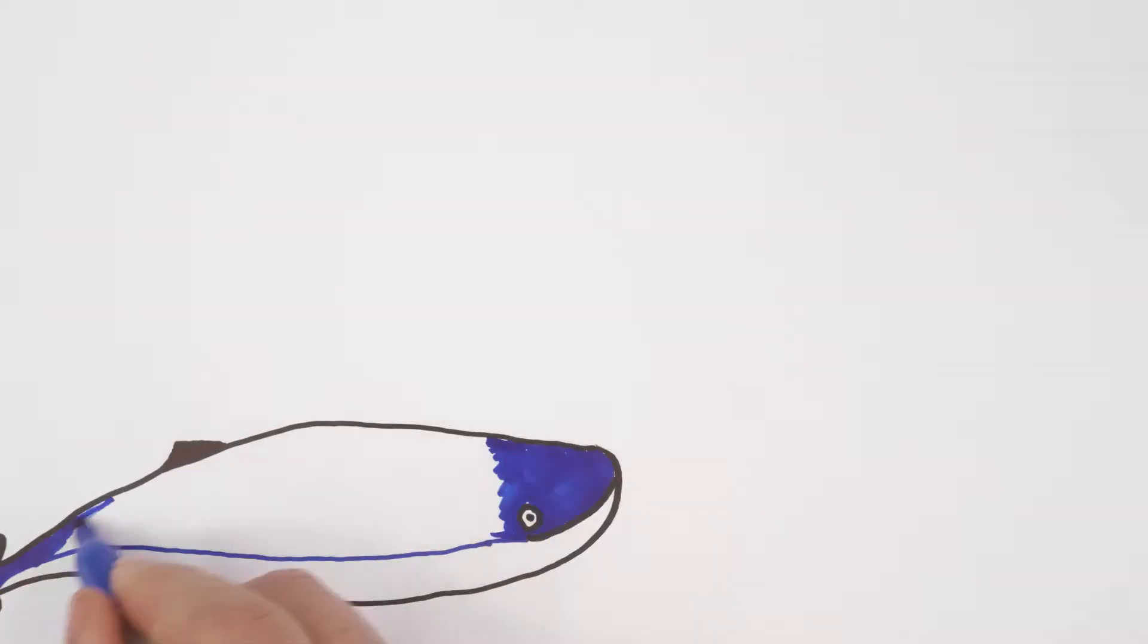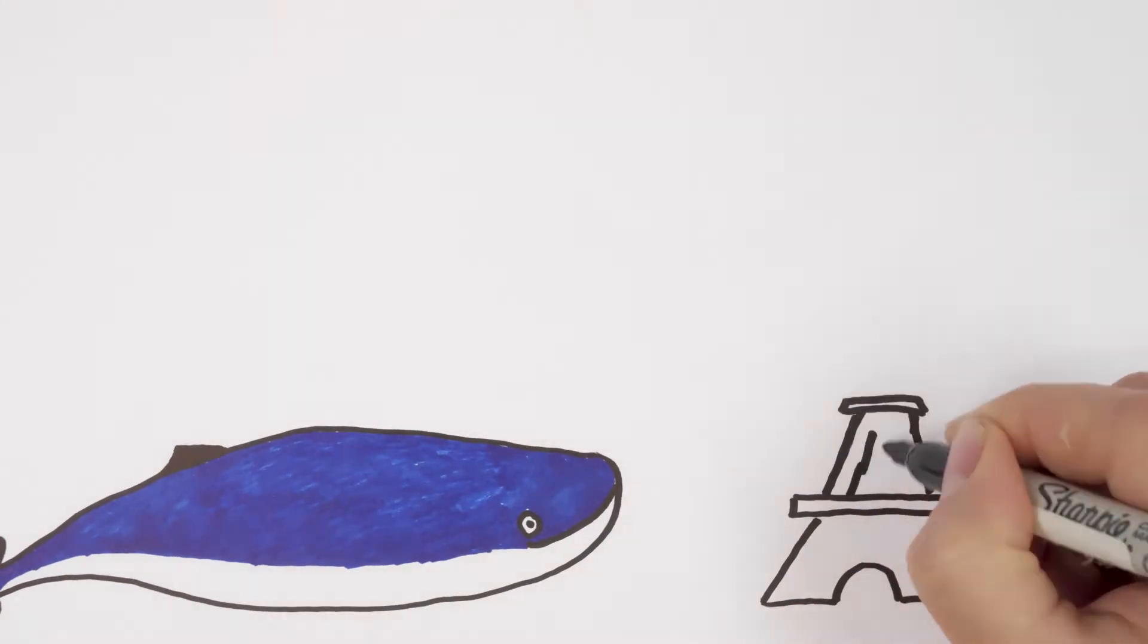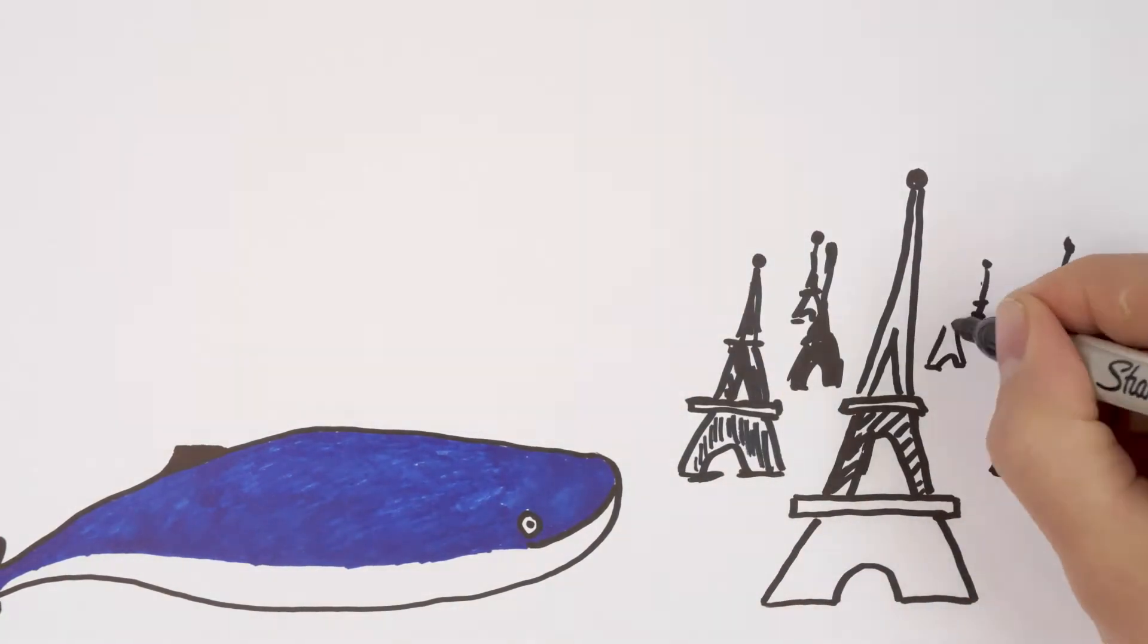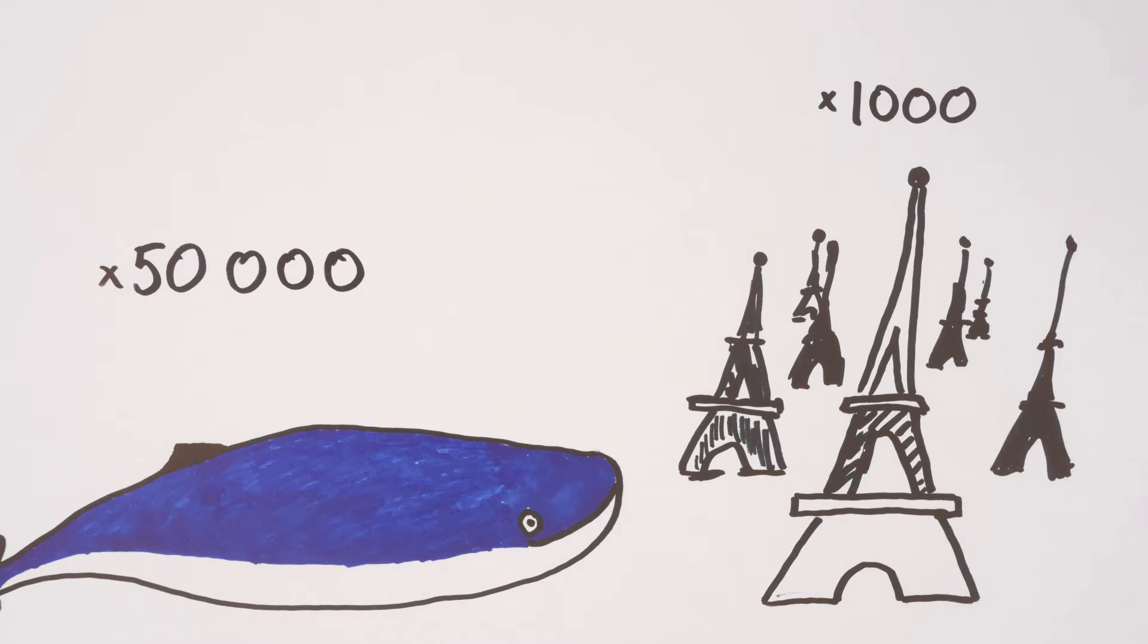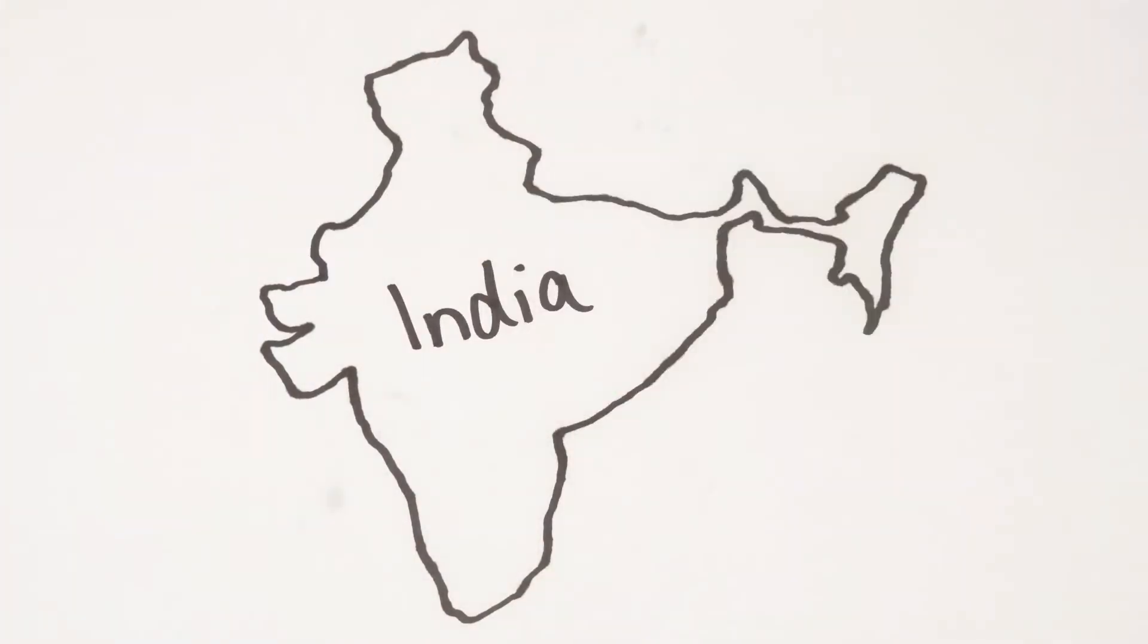Oceanic plastic pollution is a huge problem and it's on the rise, with an estimated 8 million tonnes of plastic waste entering our oceans each year. That is equivalent to around 1,000 Eiffel Towers or 50,000 blue whales. There is even a patch of plastic waste bigger than the size of India floating in the Pacific Ocean.